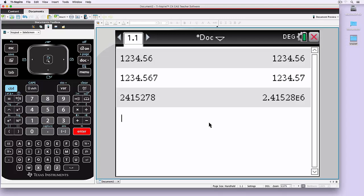And when you make a larger number, you'll notice that it starts using scientific notation. So 2.41528E6 is just 2.41528 by 10 to the 6.